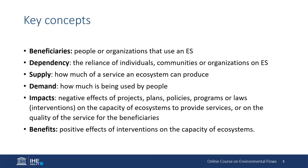Let's review some key concepts first. Beneficiaries are the people or organizations that use ecosystem services. Dependency is the reliance of individuals, communities, or organizations on particular ecosystem services. The supply is how much of a service an ecosystem can produce and can be taken from it. The demand is how much is being used by people.